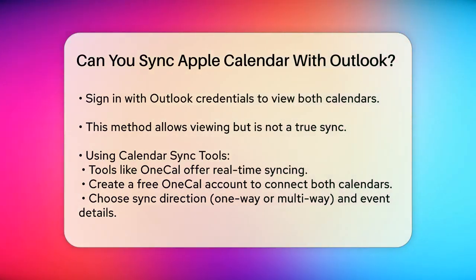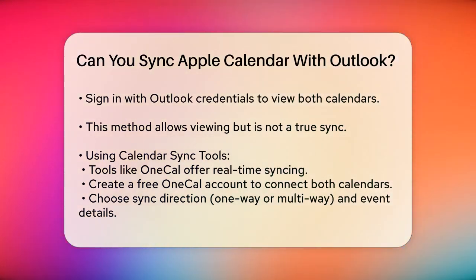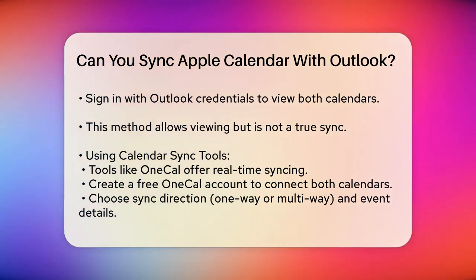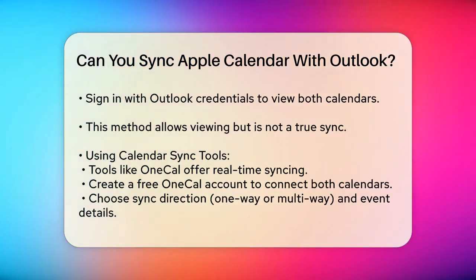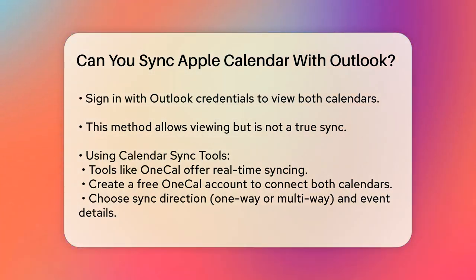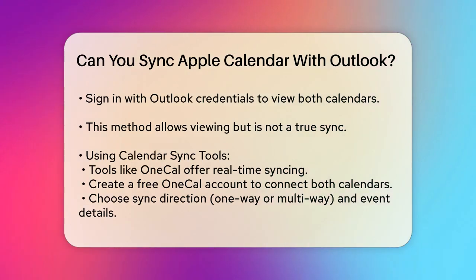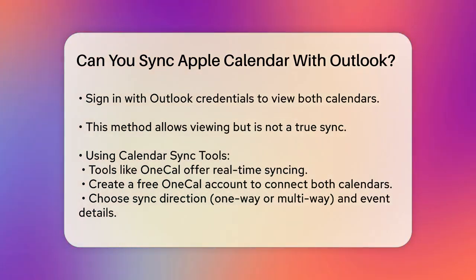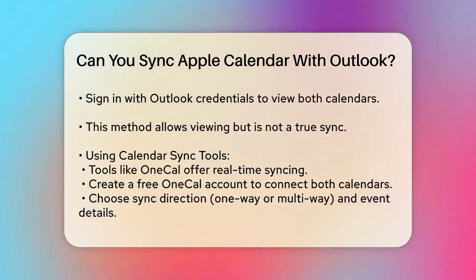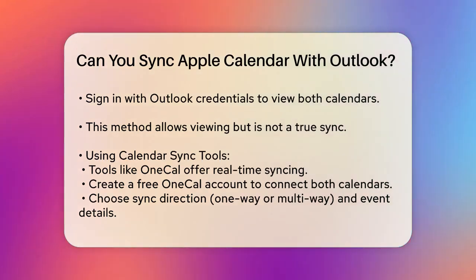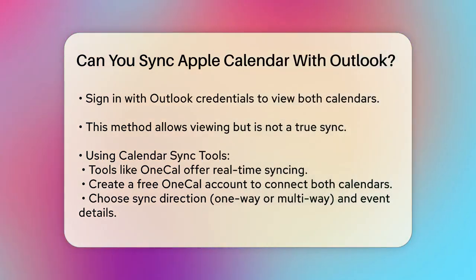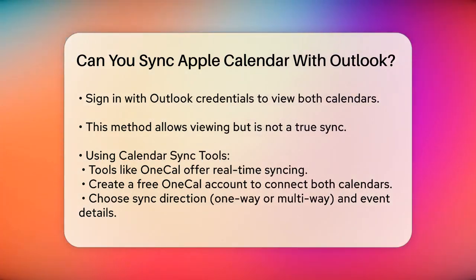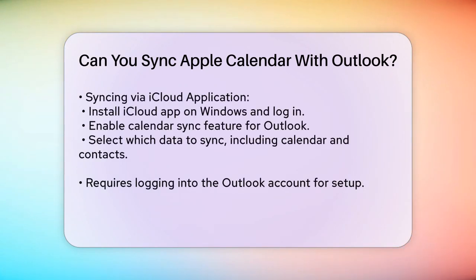Here's what you need to do: create a free OneCal account, connect your Apple and Outlook calendars, and start the sync process. You can choose the direction of the sync — one-way or multi-way — and select what event details to sync. This way, your Outlook events will be cloned into your Apple Calendar in real-time, accessible on all your devices.